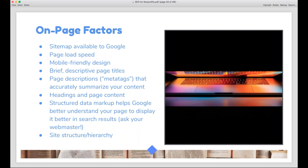Google also looks at your site structure and hierarchy — whether your website is robust and structured, or thin with only a few pages and no sub-pages. It's trying to determine how trustworthy and authoritative you are, so the more robust your site, the higher you'll rank. Many of these are really easy wins that don't require a lot of work, like adding a better title, meta tags, headers, or putting your keywords in your headers. Going forward, make sure you're taking these factors into account when building new content.